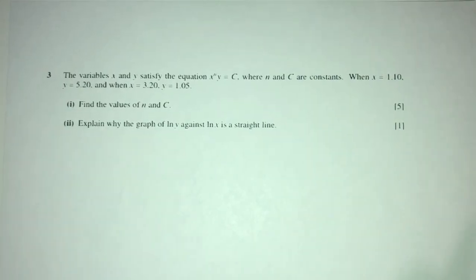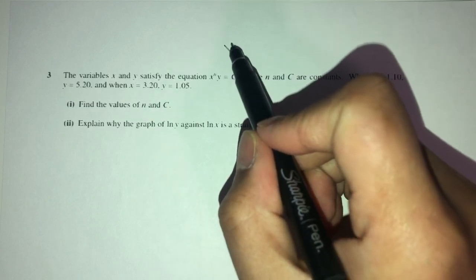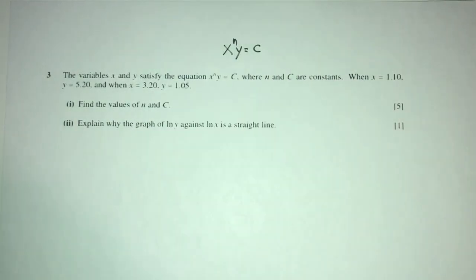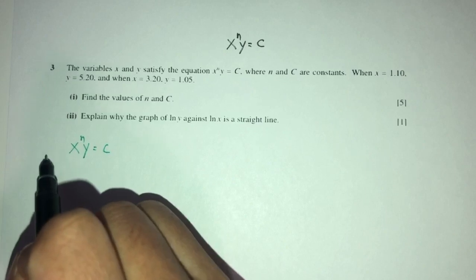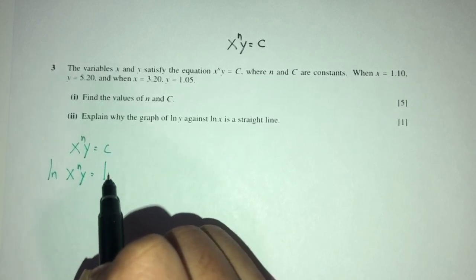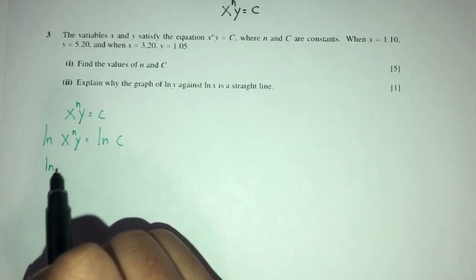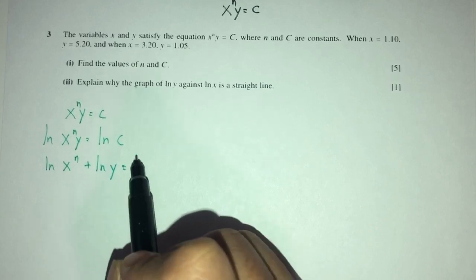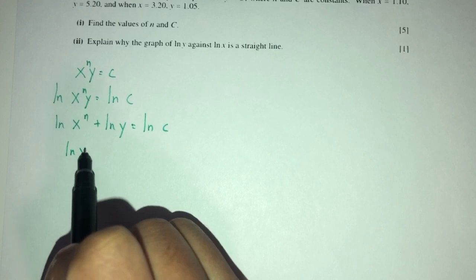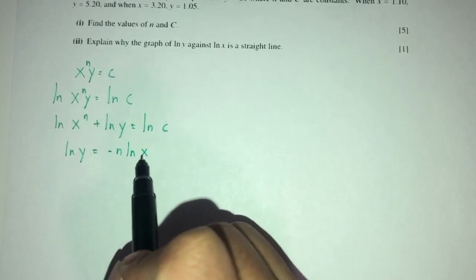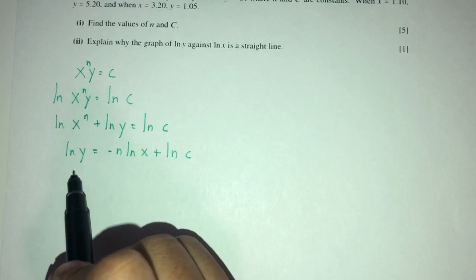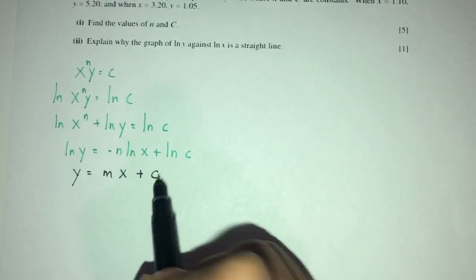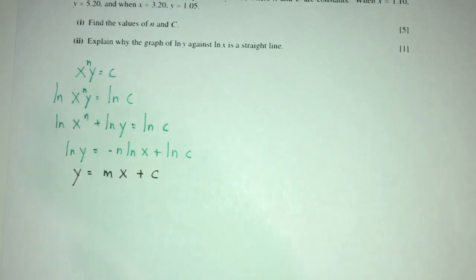Question three: variables x and y satisfy x^n × y = c. As with A Level math, we apply ln to both sides: ln(x^n) + ln(y) = ln(c), which gives ln(y) = −n·ln(x) + ln(c). This resembles y = mx + c, the equation of a straight line, so we can use this form to find n and c.